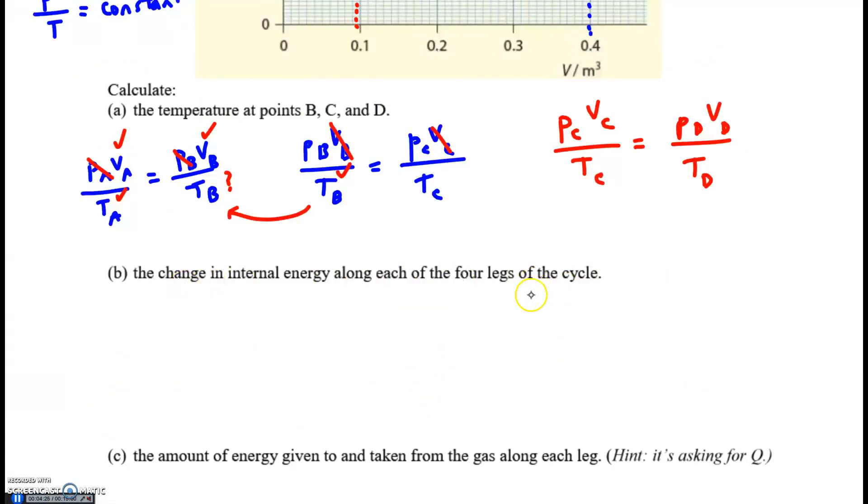Find the change in internal energy along each leg. Internal energy is 3 halves nRT. That's the equation from our data booklet. But nRT is equal to pressure times volume. That's how we're going to find the change in internal energy along AB, BC, and each of the four legs.